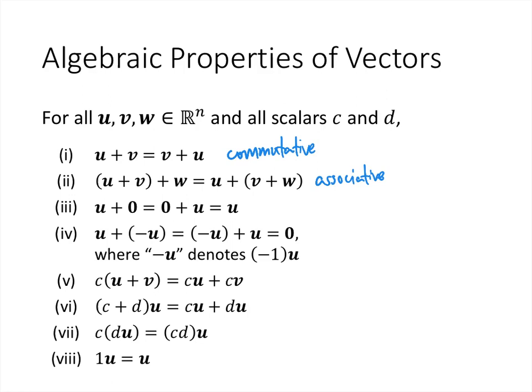Number three here is something that we already talked about, that when we take u plus 0 and 0 plus u, that's just the same as u itself. And this would tell us that the zero vector is an additive identity. Number four says that if we define negative u to simply be negative 1, the scalar negative 1 times u, then u and minus u, if we add those together, they cancel out and just give us the zero vector. This means that minus u is the additive inverse of the original vector u.